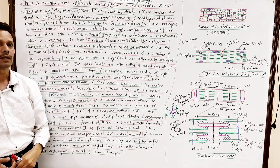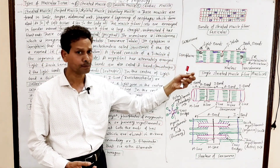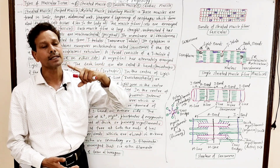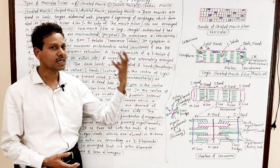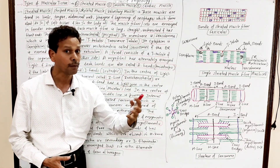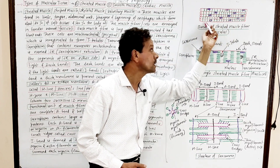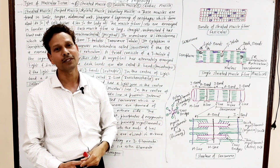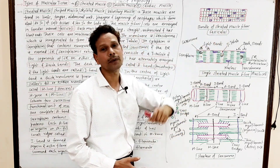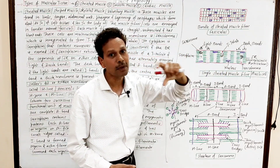We will discuss skeletal muscles — also called striated, striped, or voluntary muscles. These muscles are found in our limbs, tongue, abdominal wall, pharynx, and the beginning of the esophagus. Skeletal muscles constitute about 80% of soft tissues and about 40% of the body weight. Skeletal muscles have bundles of muscle fibers or muscle cells, and these bundles are named fasciculi. Each bundle, or fasciculus, consists of thousands of muscle cells or muscle fibers.